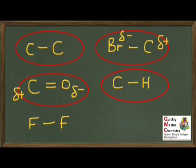Finally, the fluorine-fluorine bond. This one has an easy trap to fall into: you might remember that fluorine is very electronegative and think something exciting must be going on. However, we have two identical atoms in the bond — it doesn't matter what they are; if they're identical, you can't have a significant difference in electronegativity, so the electrons will be fairly equally shared and there will be no delta-plus or delta-minus charges. This is a non-polar bond.